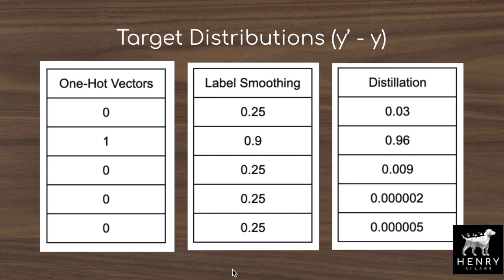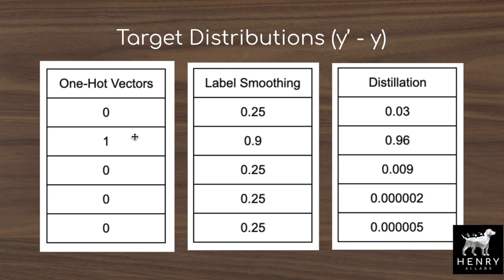Common target distributions used in machine learning include one-hot encoded vectors, which is how datasets like CIFAR-10 are labeled — a one in the dog index and zero everywhere else. One problem with one-hot encoding is that the model develops overconfident predictions. If it tries to assign probability to another class, it receives a cross-entropy penalty, even if two classes like cat and dog are more similar than cat and truck.